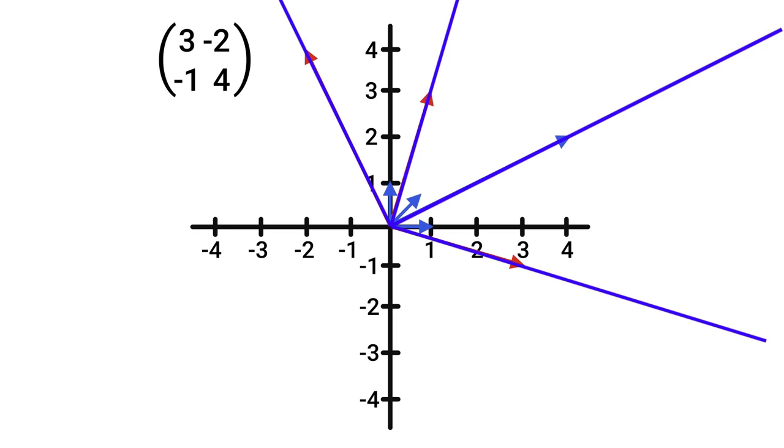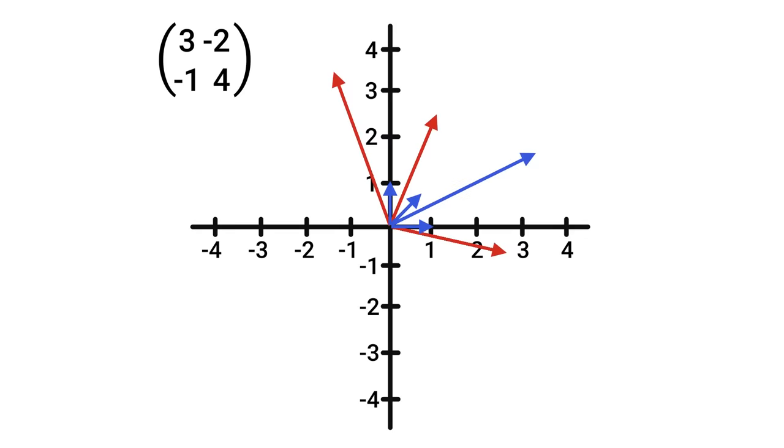Anyways, I'm going to redo those transformations once more, but this time pay attention to this vector here. You'll notice it's the only one that is just scaled. It doesn't rotate at all. And this would happen to any vector on that same line because of what we just saw.